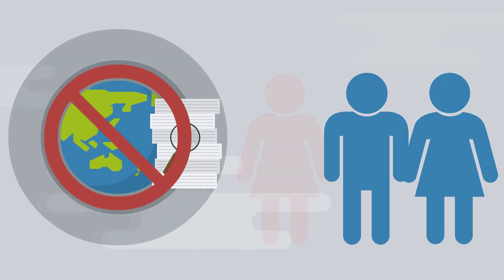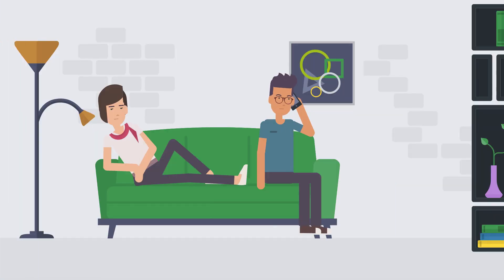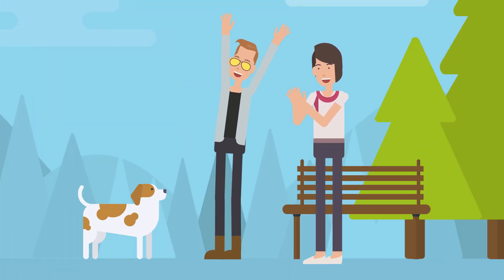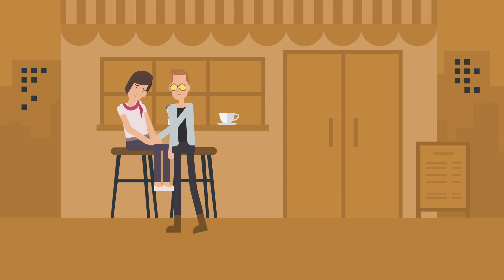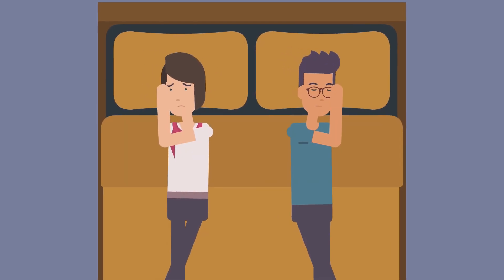It's important to note that these findings are not universal, and that infidelity can happen for a variety of reasons. Some people cheat because they feel neglected in their relationships, while others cheat because they are seeking novelty or excitement. Others cheat because they're unhappy in their relationships, or because they feel like they're not being fulfilled emotionally or sexually.